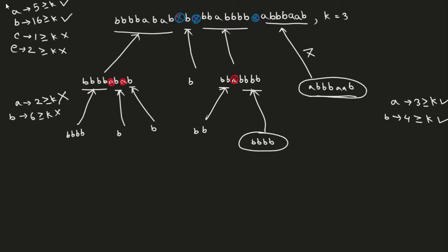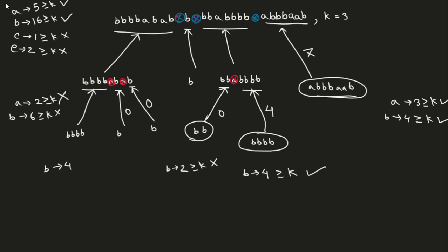For the next string, B occurs four times, which is greater than or equal to k, so it returns four. For the string where B occurs twice, that is not greater than or equal to k, so it returns zero. Single B's also return zero. And the final four-B string returns four.